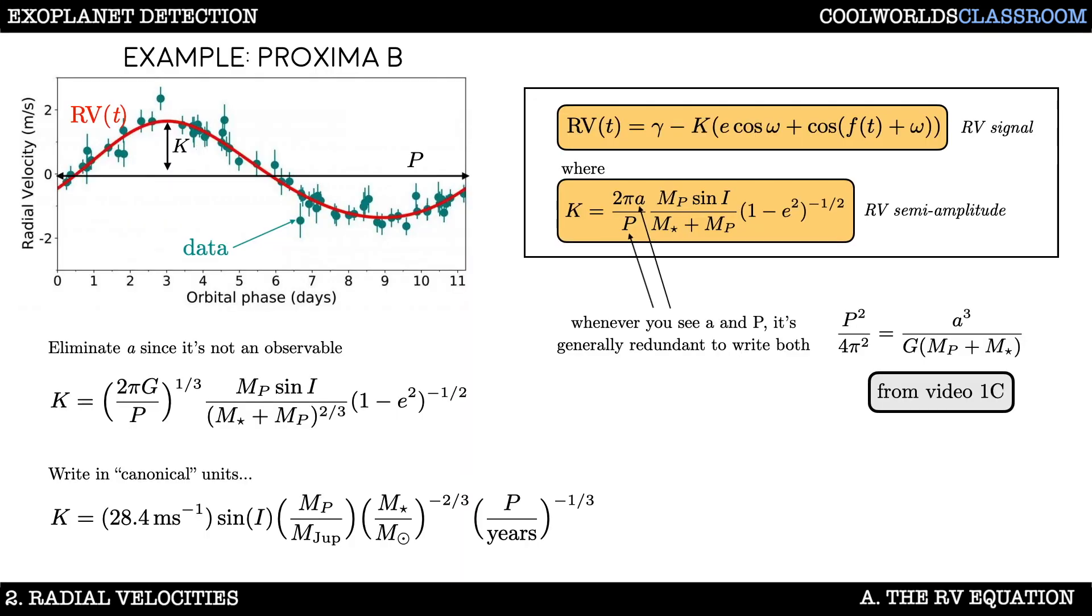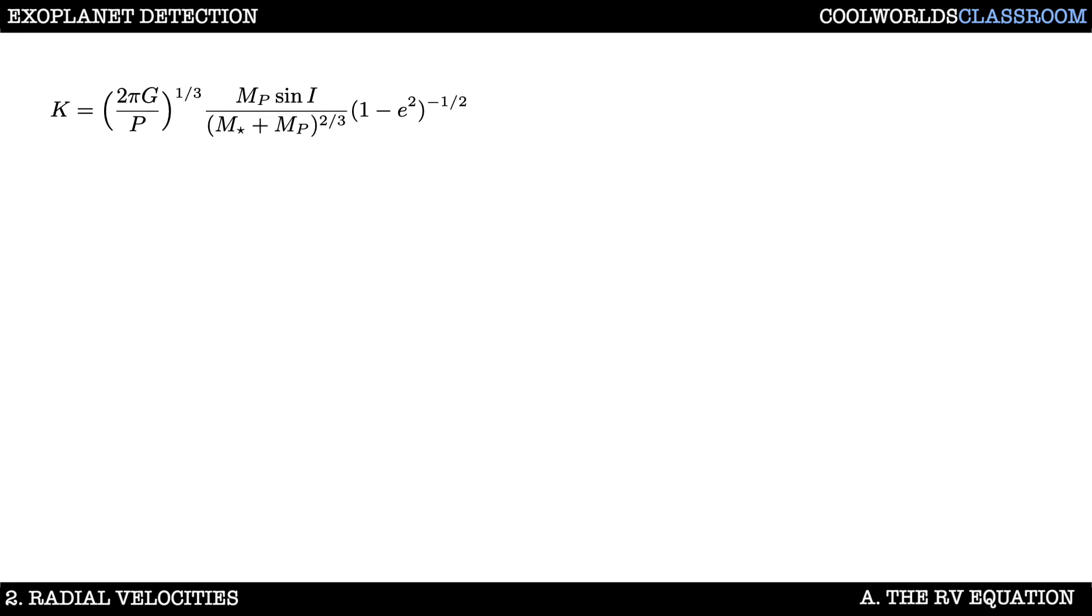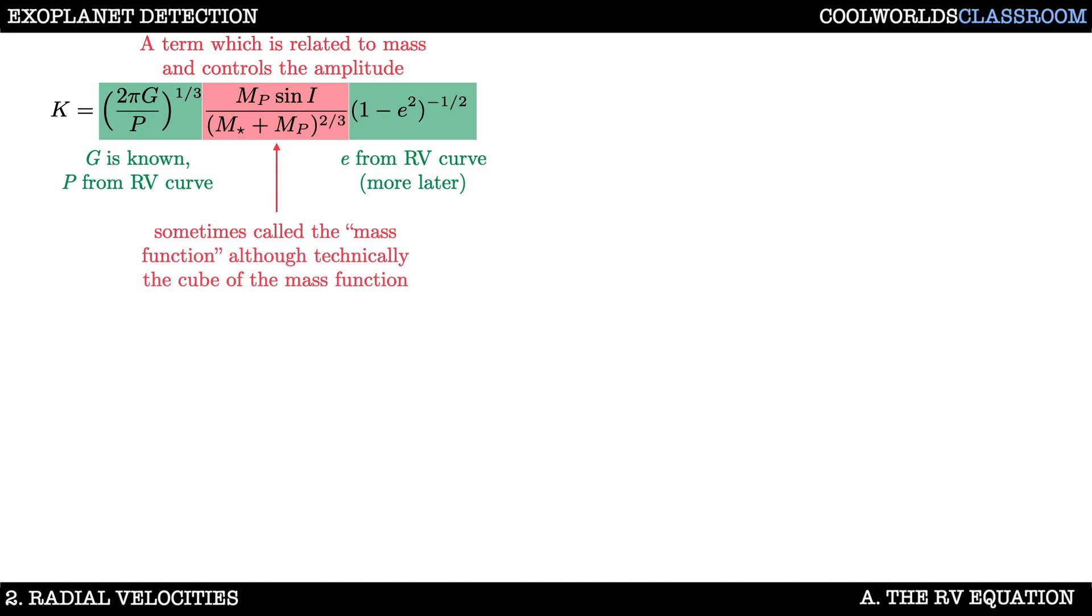If we go back to the full equation without assuming m star is much greater than mp, I want to highlight another important point. These terms here are easily known. There's g and pi which are just constants, and p which comes from the periodicity of the rv signal itself. Likewise eccentricity can be measured from the shape of the rv waveform. But this stuff here in the middle, this is a priori unknown and directly controls the semi-amplitude. It's a bit of a mathematical jumble and is often just simply coined the mass function, or to really follow historical convention it should be called the cube of the mass function. Now the problem with this mass function is that mp, the mass of the planet, appears in two places.